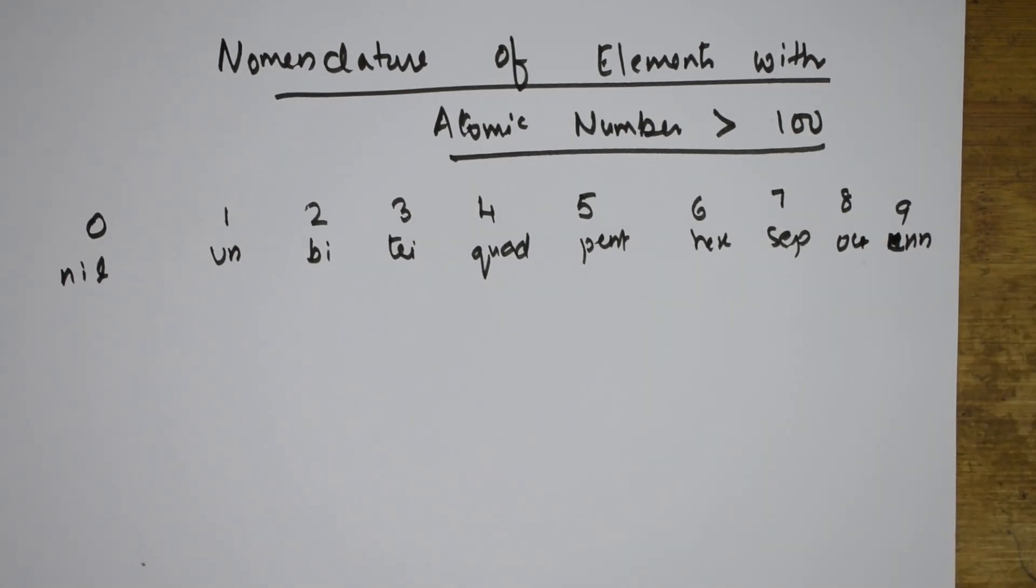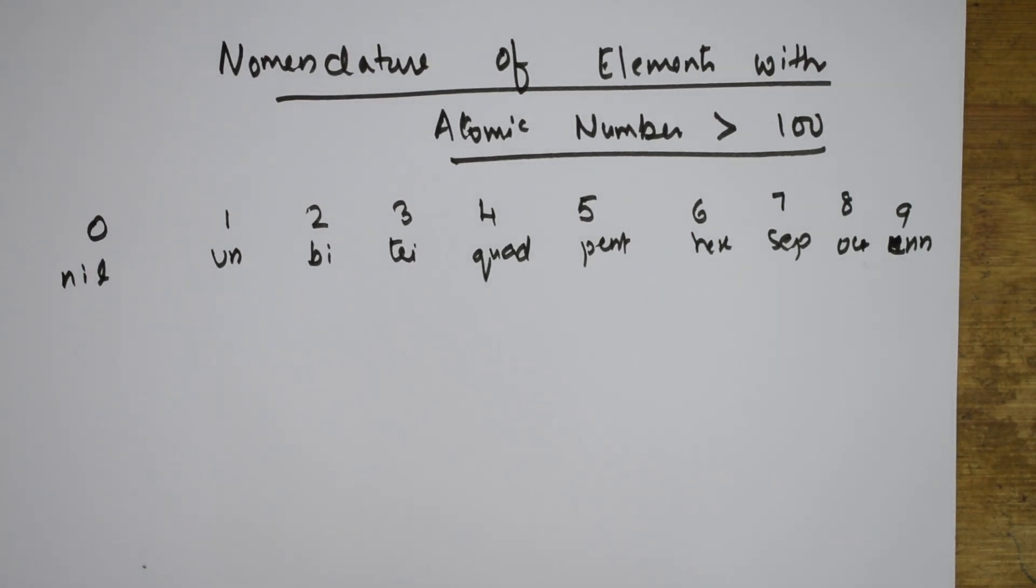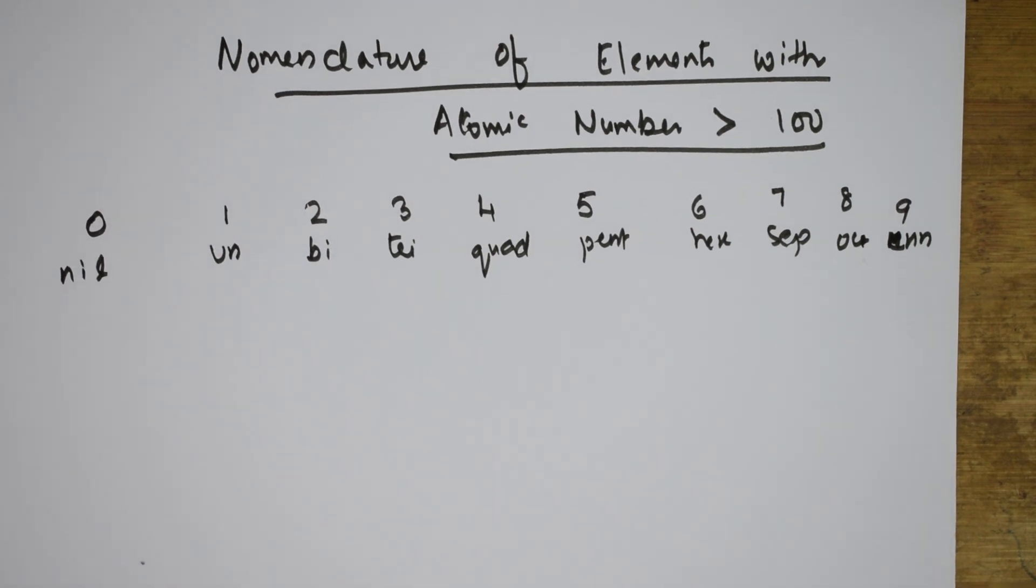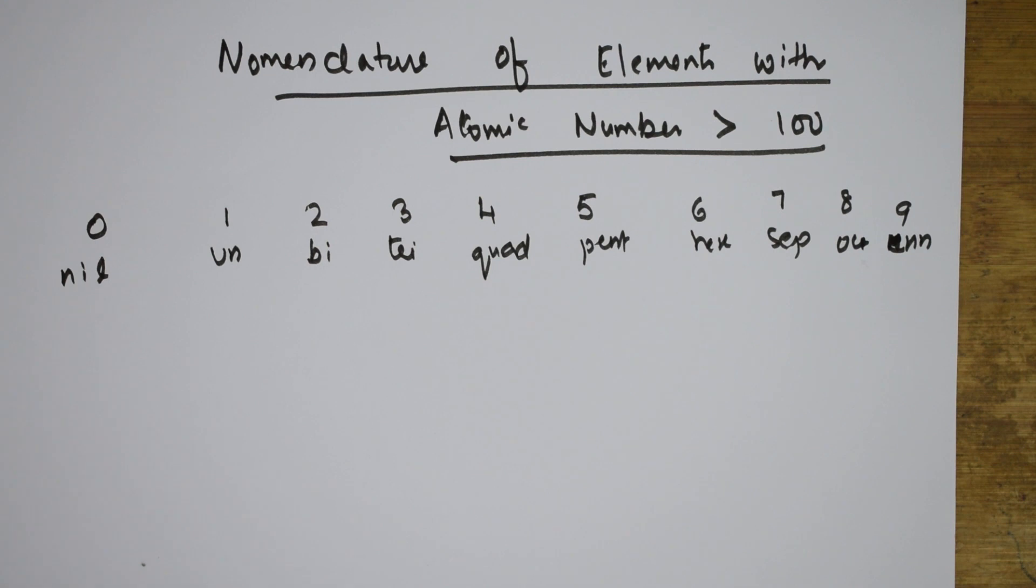This is what IUPAC has given us. These are the guidelines with which we will be naming the elements. Now, in some cases, when the names are shortened, we will be using that. Let me use certain examples.